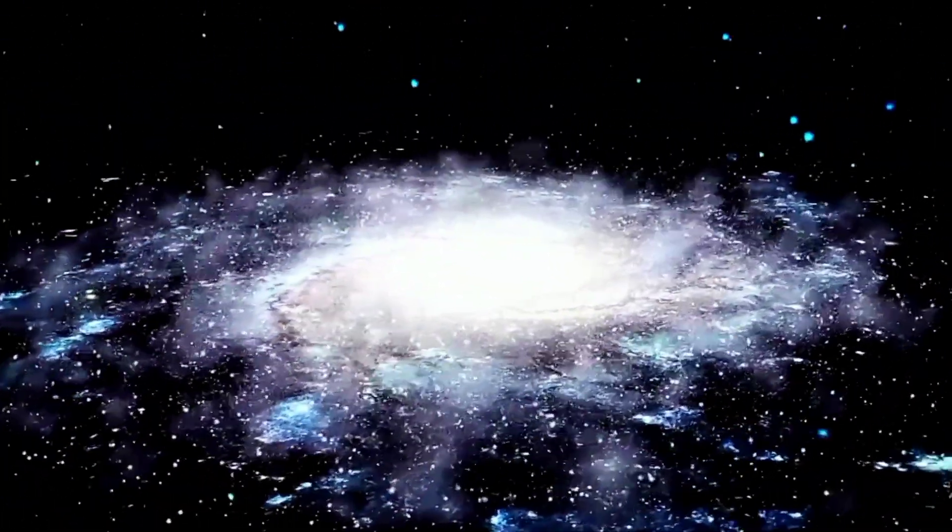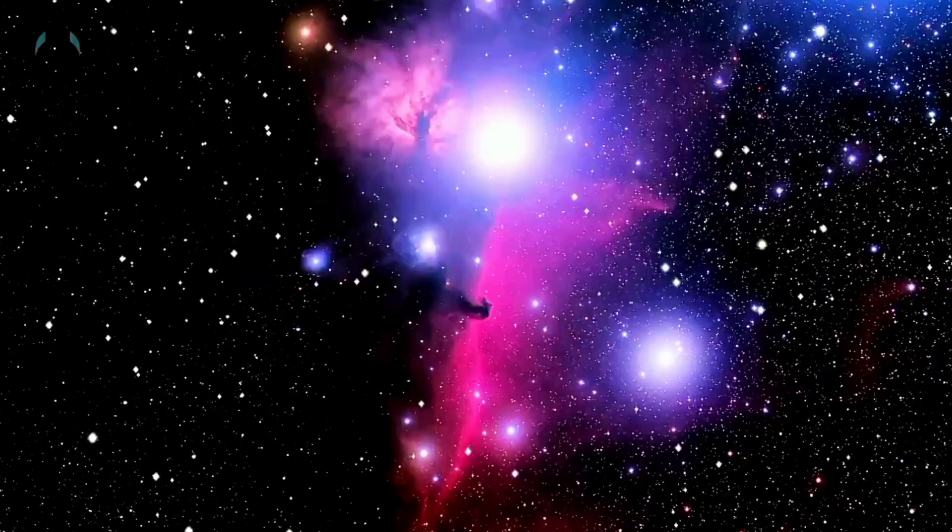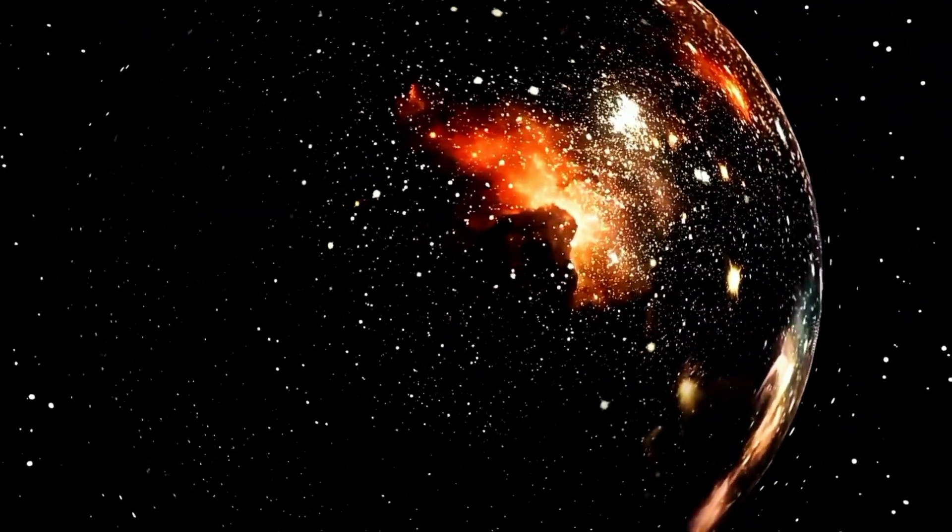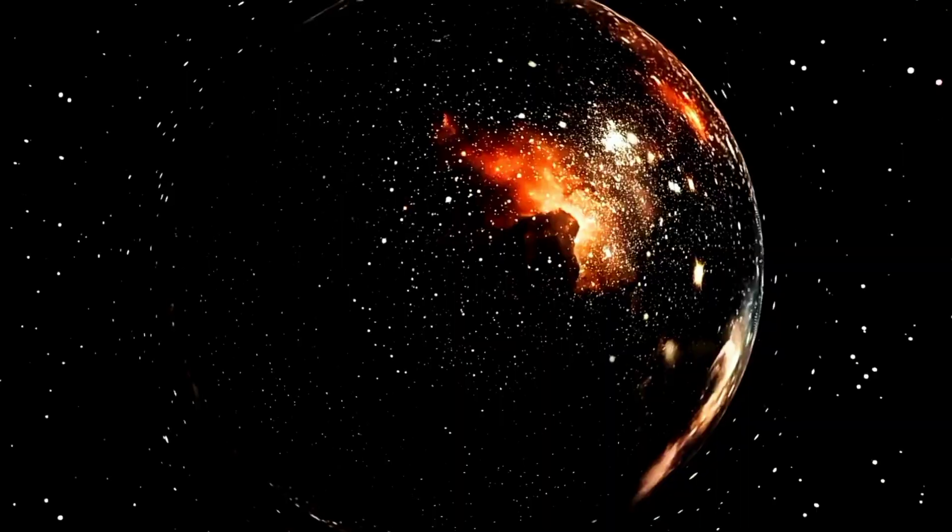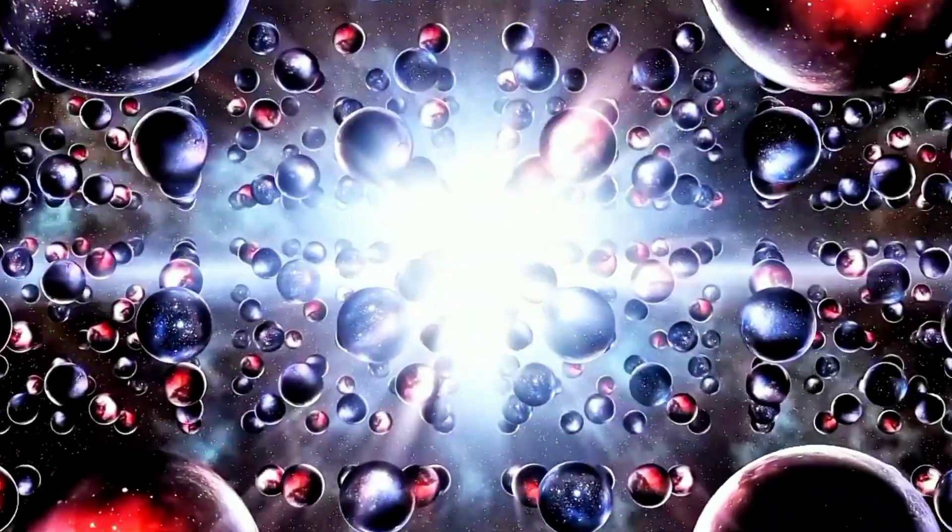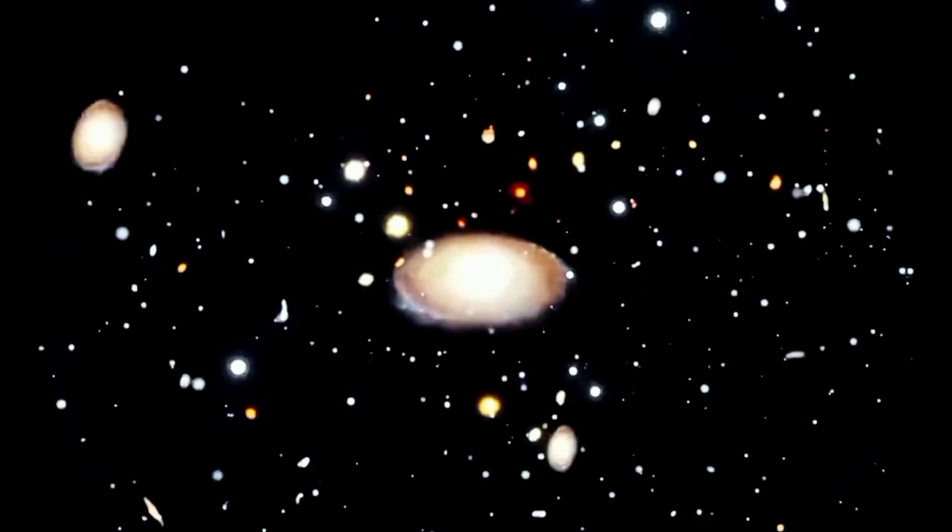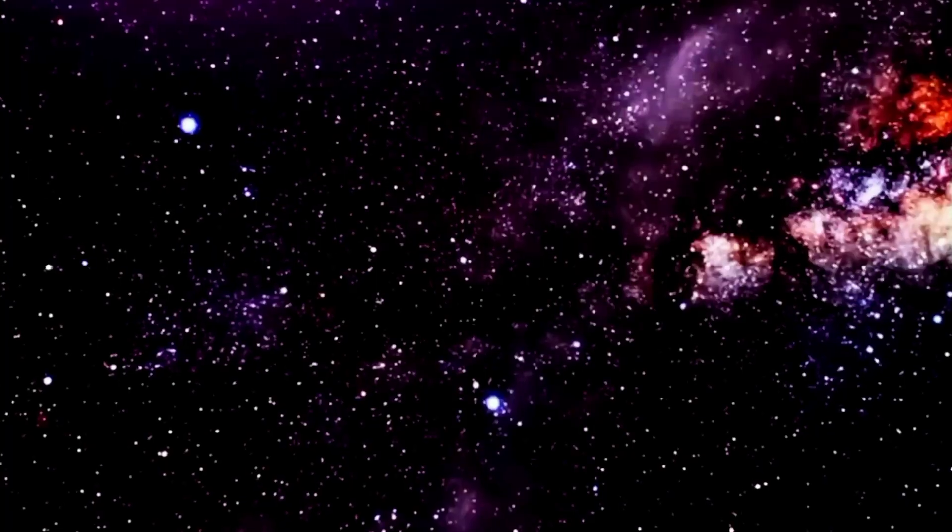So far, everything we've discussed falls under the observable universe. That is, the part we can see with our telescopes. Our vision is limited by light. And according to scientists, the observable universe has a diameter of around 93 billion light years. This means the distance from one end of the universe to the other is so vast, it takes billions of years for the light to reach us.